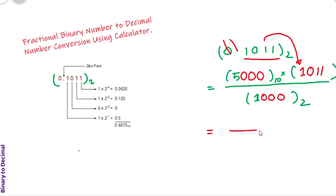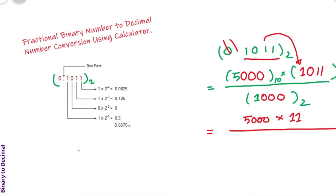And finally, if we calculate this number using a calculator, then we will get the corresponding decimal number. Here 5000 is the decimal value, and we know 1011 — we have to convert it into decimal number and the corresponding decimal number is 8.